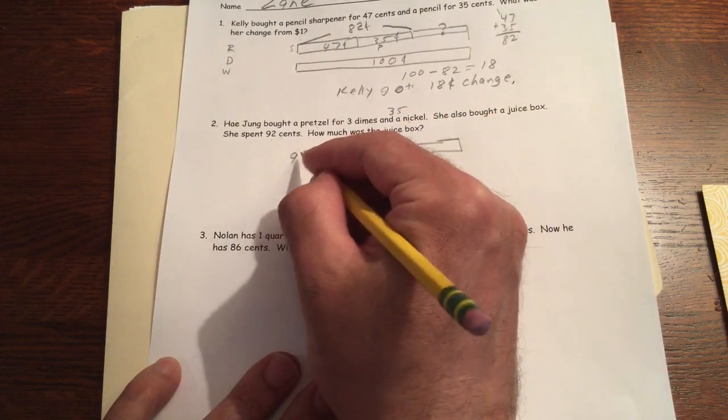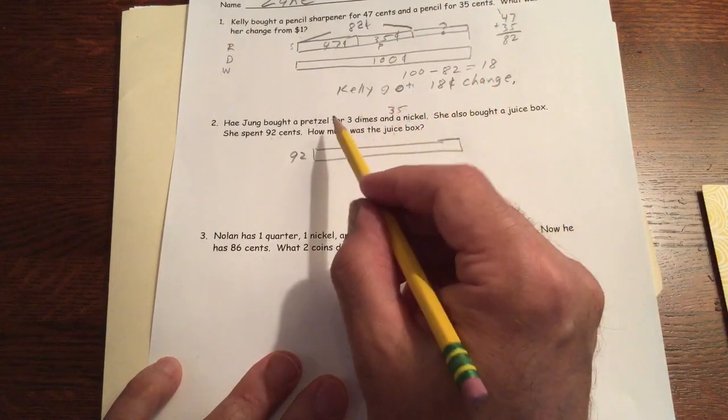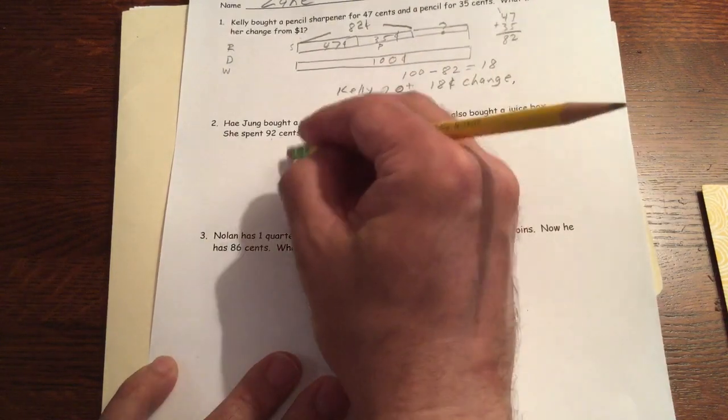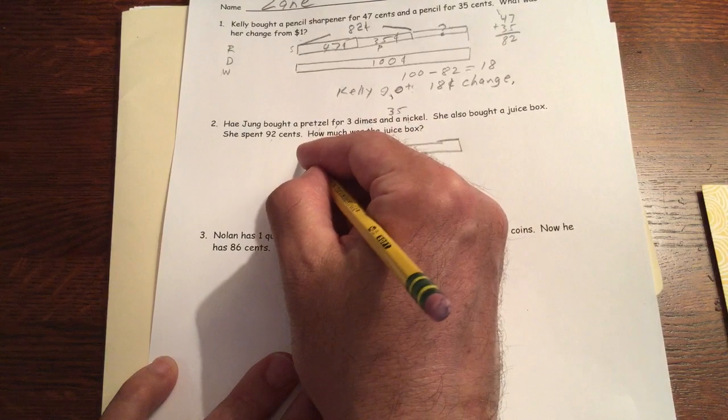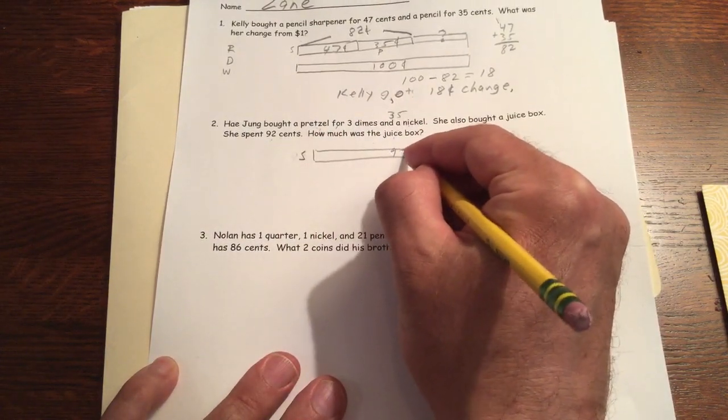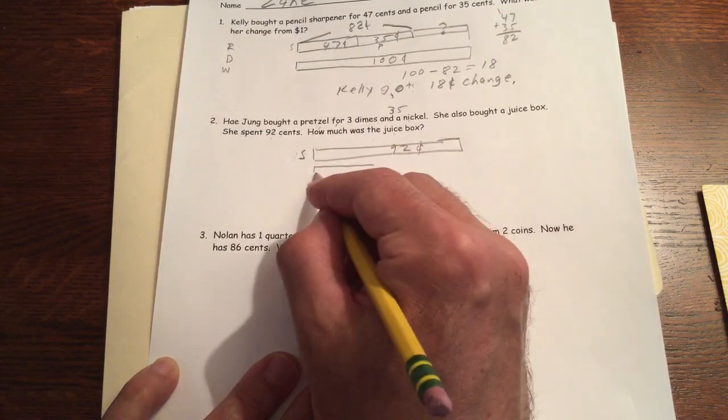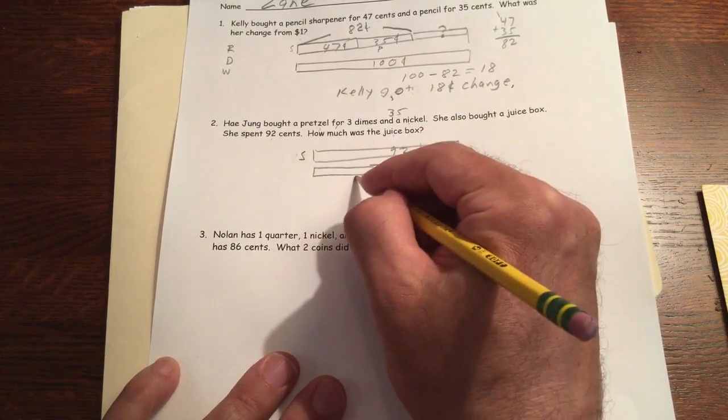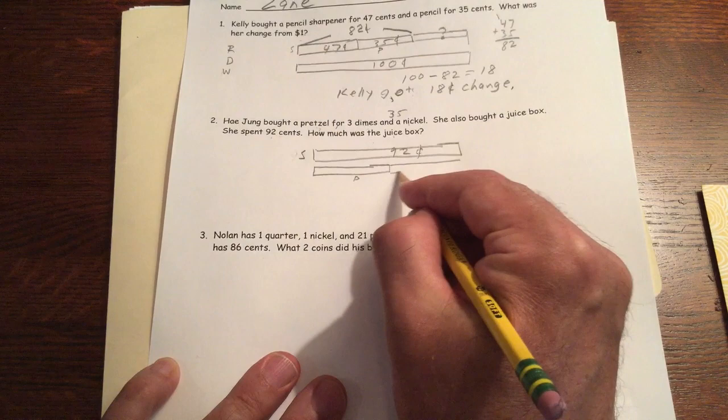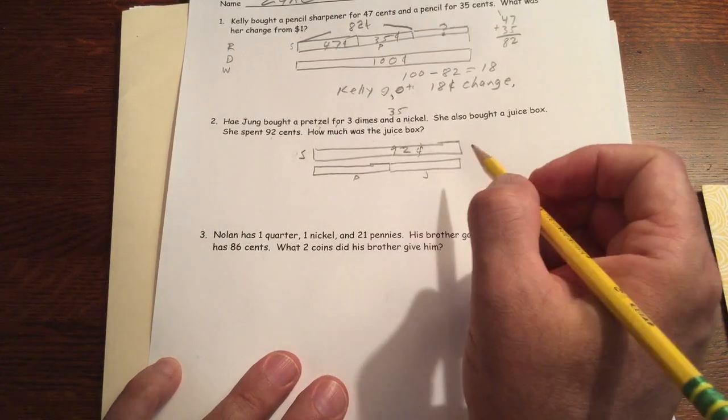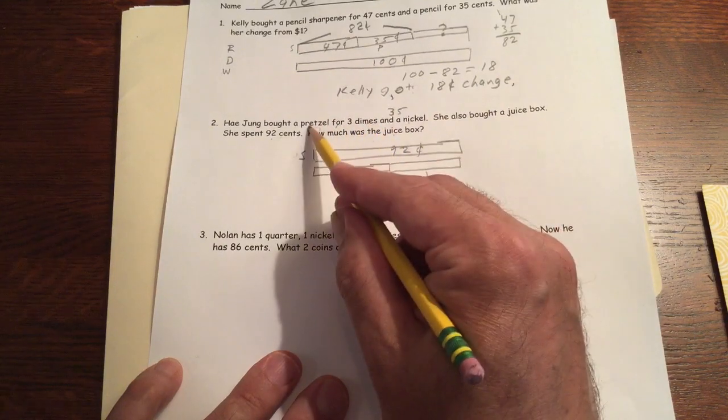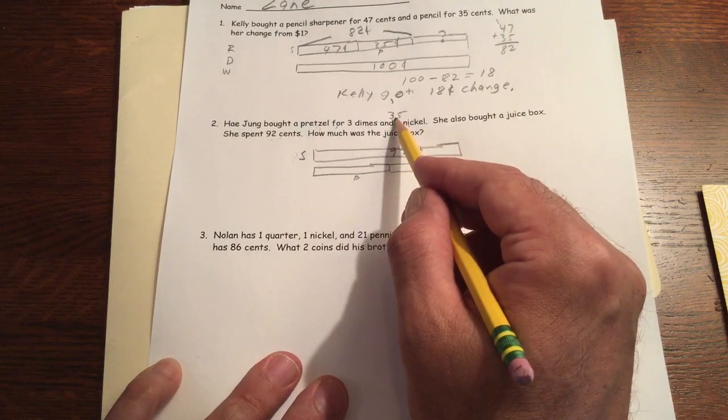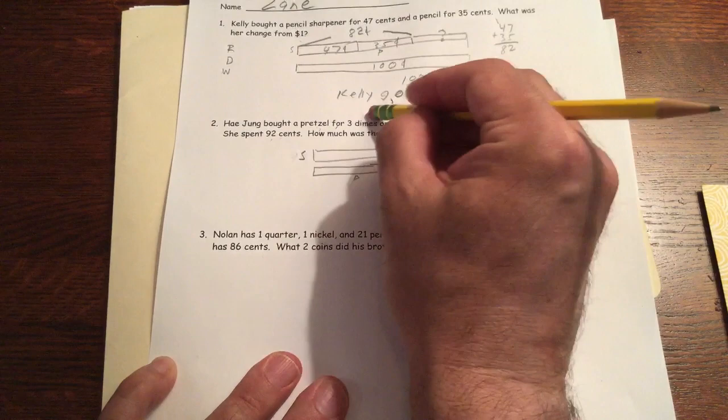So we know she spent 92 cents, that's the total. She spent 92 cents all together, but she bought a pretzel and a juice box. So this is how much she spent, 92 cents. Here's the, this part was the pretzel and this part of what she spent is the juice box. And we know that the pretzel was three dimes and a nickel, so we figured out the three dimes and a nickel, that's 30 and 5, that's 35. So you could write that like I've been doing, you could write that up here.